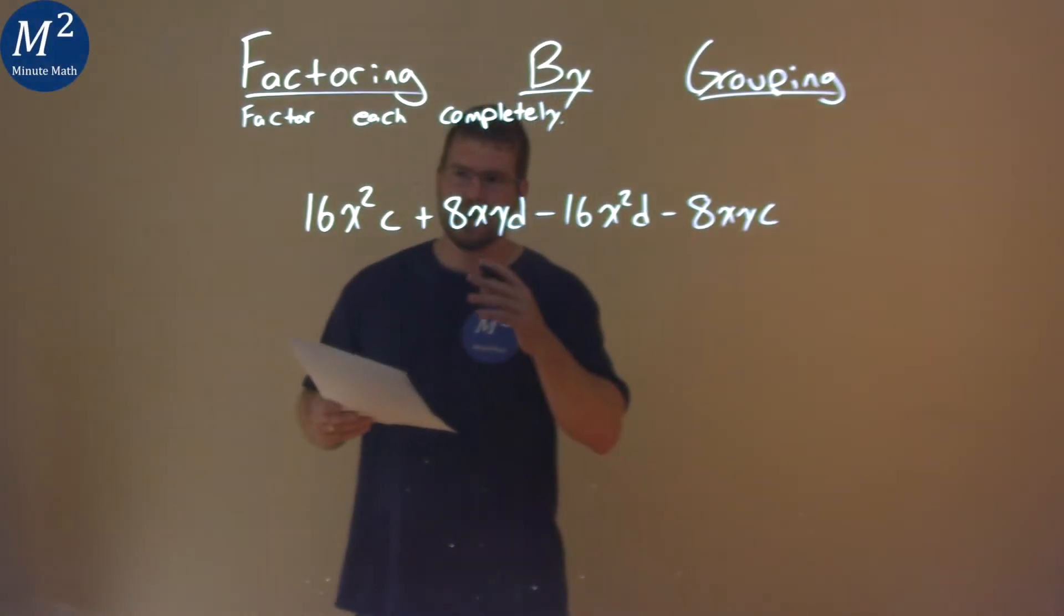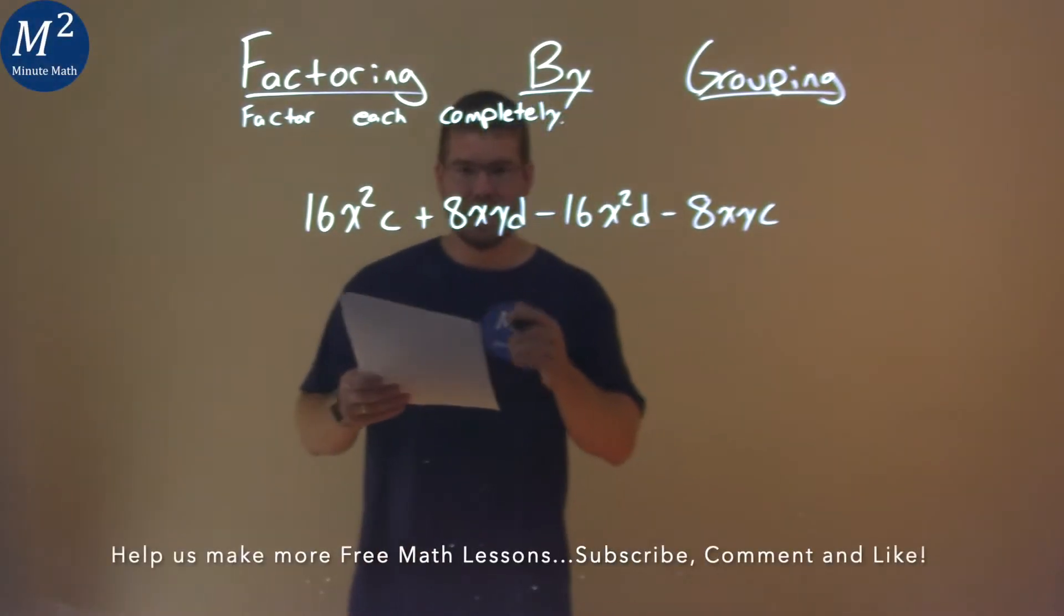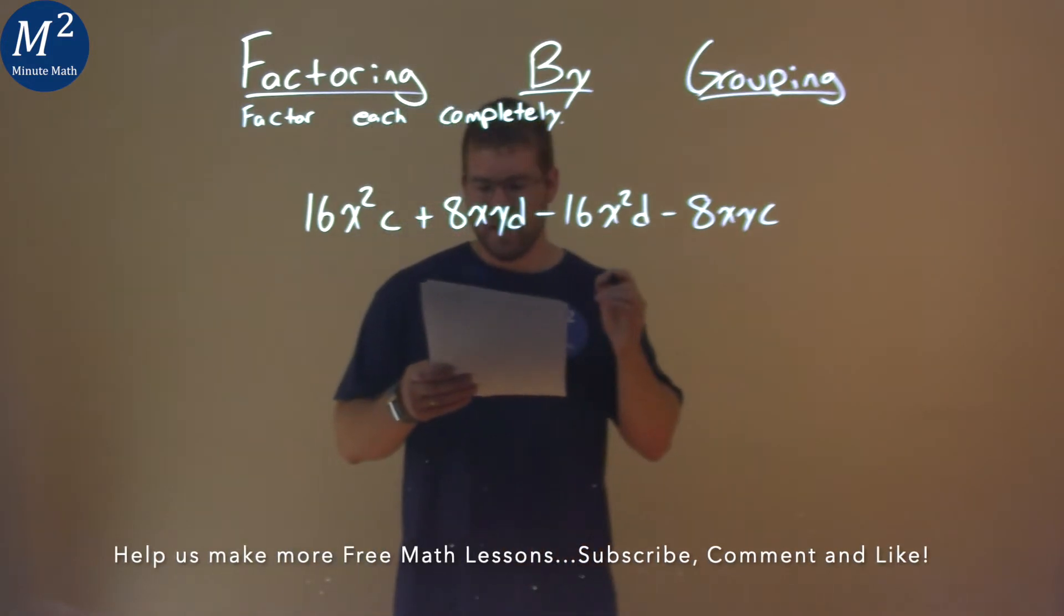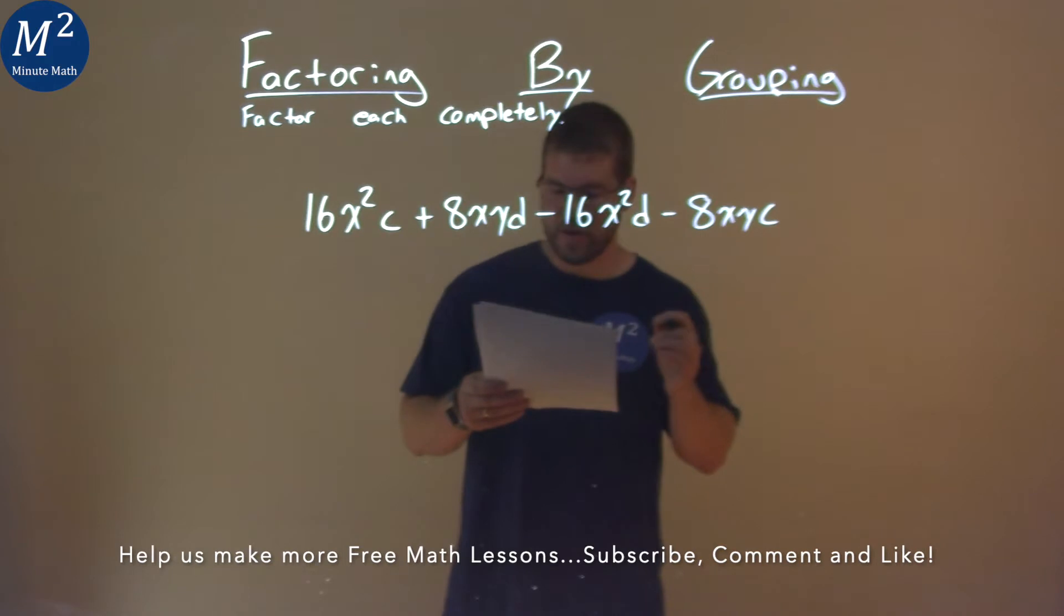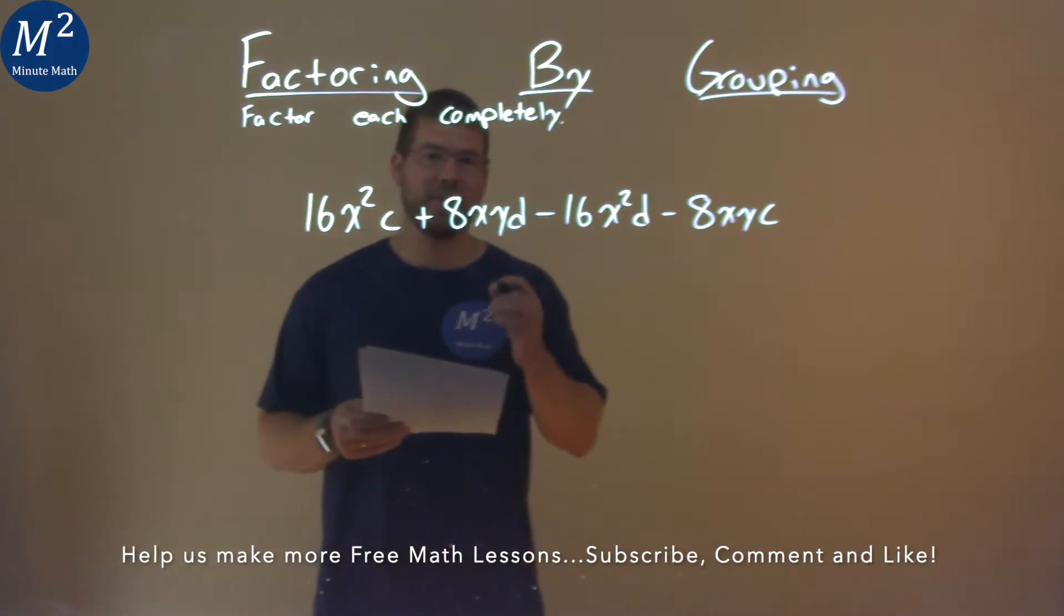We're given this problem right here: 16x²c + 8xyd - 16x²d - 8xyc, and we need to factor this completely.